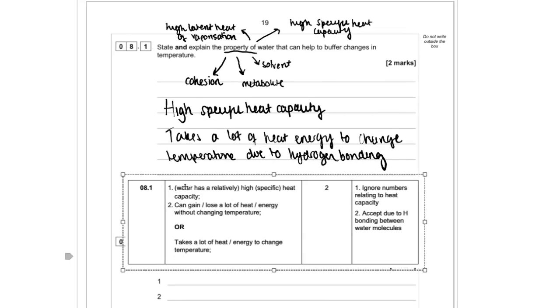So we're getting one mark for stating the correct property and one mark for explaining that. And you could have talked about hydrogen bonding. So it's really important that you know all of your properties, you're able to explain all of these properties, and also that you're able to link them to their importance.